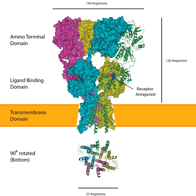Each AMPAR has four sites to which an agonist can bind, one for each subunit. The binding site is believed to be formed by the N-terminal tail and the extracellular loop between transmembrane domains 3 and 4. When an agonist binds, these two loops move towards each other, opening the pore. The channel opens when two sites are occupied and increases its current as more binding sites are occupied. Once open, the channel may undergo rapid desensitization, stopping the current. The mechanism of desensitization is believed to be due to a small change in angle of one of the parts of the binding site, closing the pore.